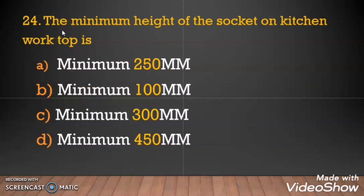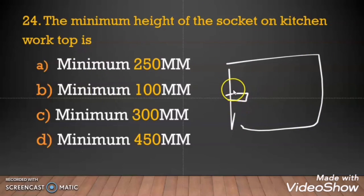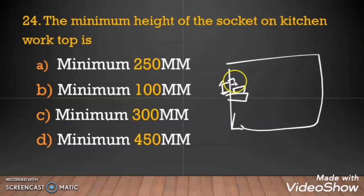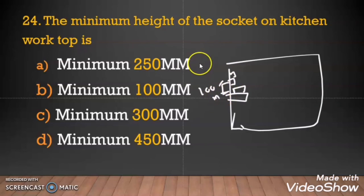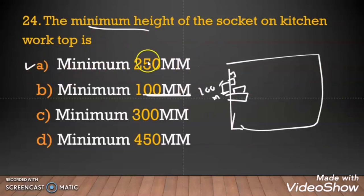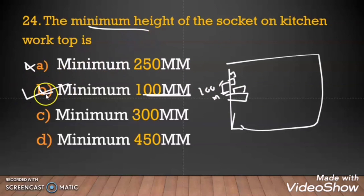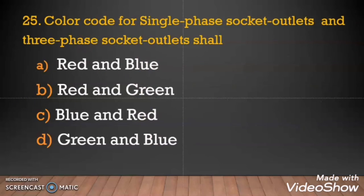Question 24: The minimum height of the socket on the kitchen worktop. In a kitchen, there is a worktop where we keep stoves, microwaves, cookers, and other kitchen equipment with sockets nearby. As per ADDC regulation, the minimum height is 100 mm from the worktop. It can go up to 250 mm, but the minimum is 100 mm. For diva regulation the minimum would be 250 mm, but as per ADDC regulation, option B, 100 mm, is correct.